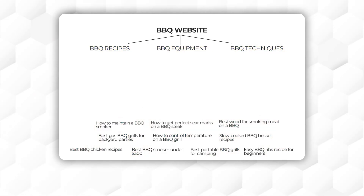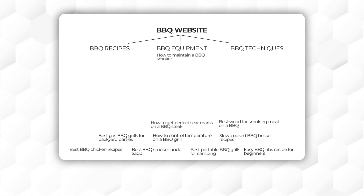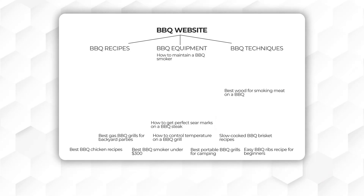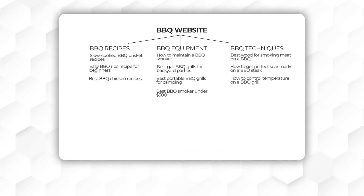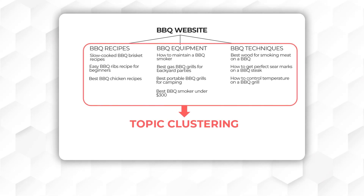For instance, how to maintain a BBQ smoker has an informational intent, meaning people are searching for information. This can be categorized under the BBQ equipment section. Similarly, best wood for smoking meat fits under the BBQ techniques category. And these other keywords can be grouped under the respective category. This is called topic clustering.